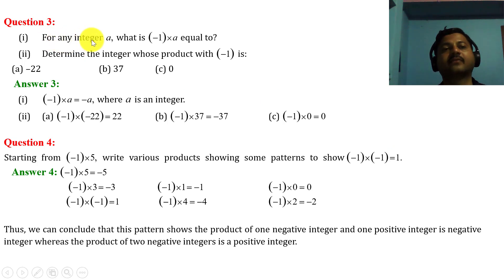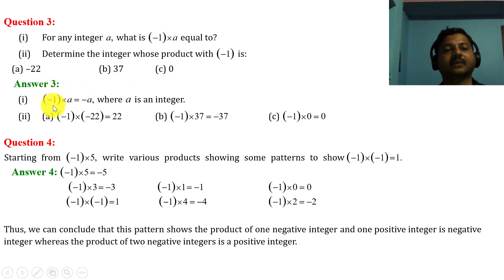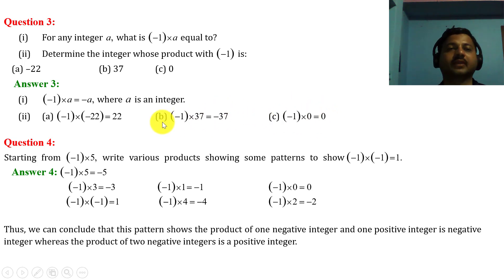Question 3: For any integer a, what is minus 1 into a equal to? Answer: minus 1 into a is minus a, since minus into plus is minus, where a is any integer. Part (b): determine the integer whose product with minus 1 is: (i) minus 22 — minus 1 into minus 22 equals 22; (ii) 37 — minus 1 into 37 equals minus 37; (iii) 0 — minus 1 into 0 equals 0. The product is also an integer in each case. Thank you, students. Next class we will discuss from question number 4.